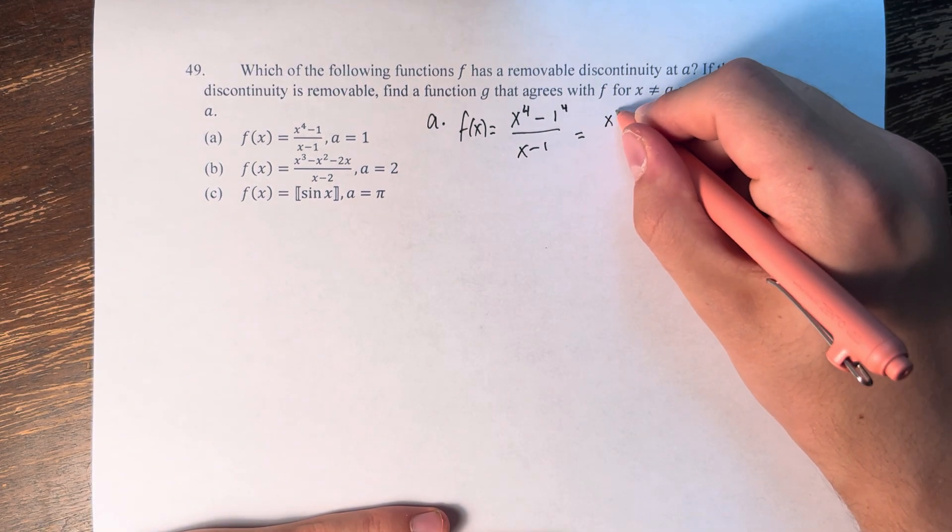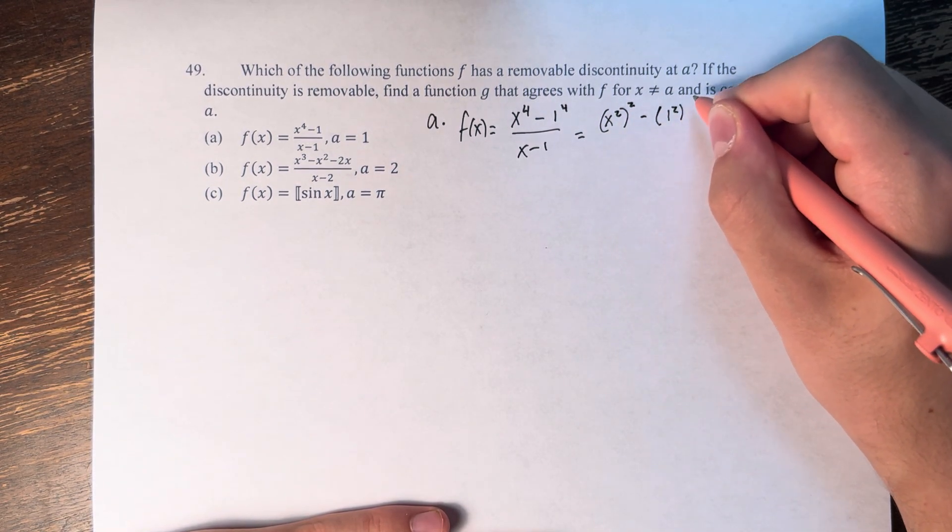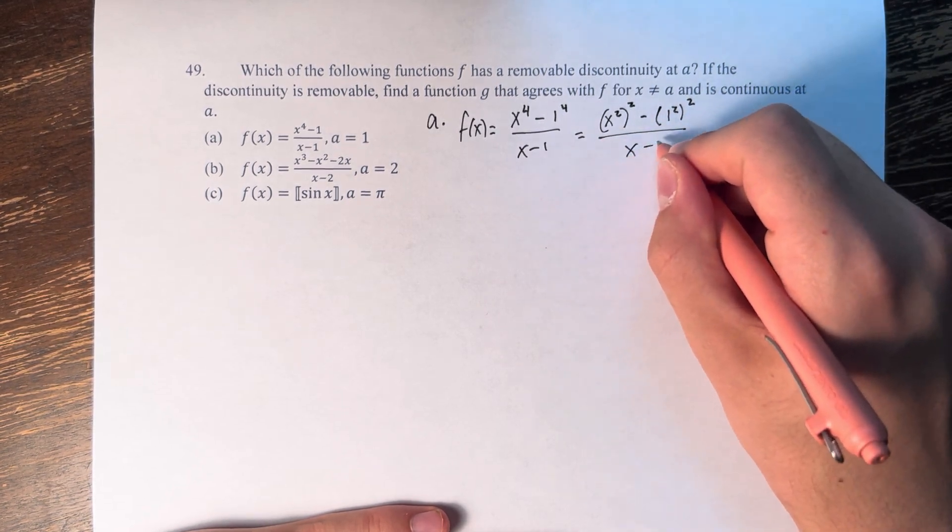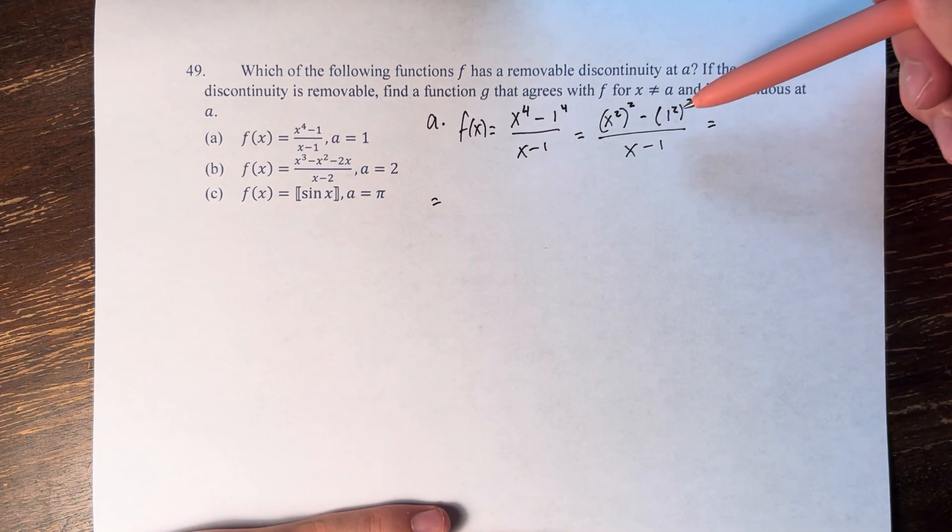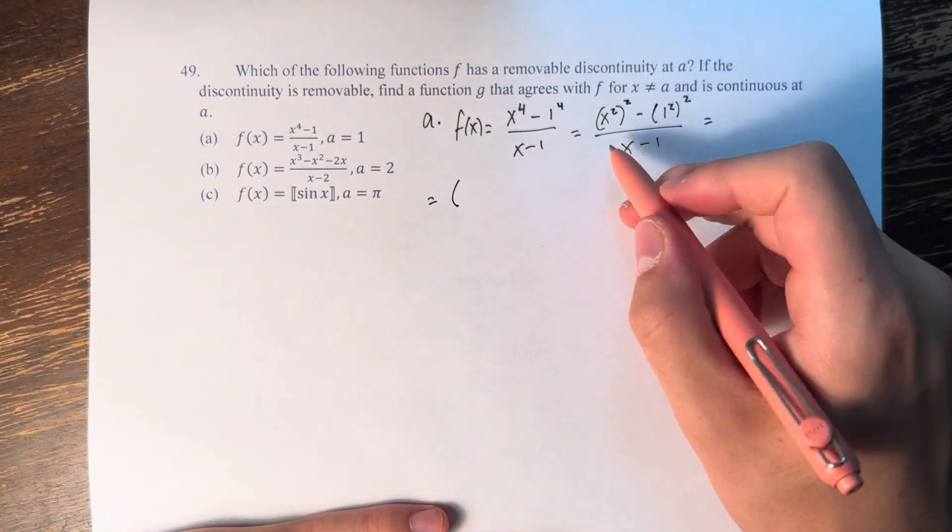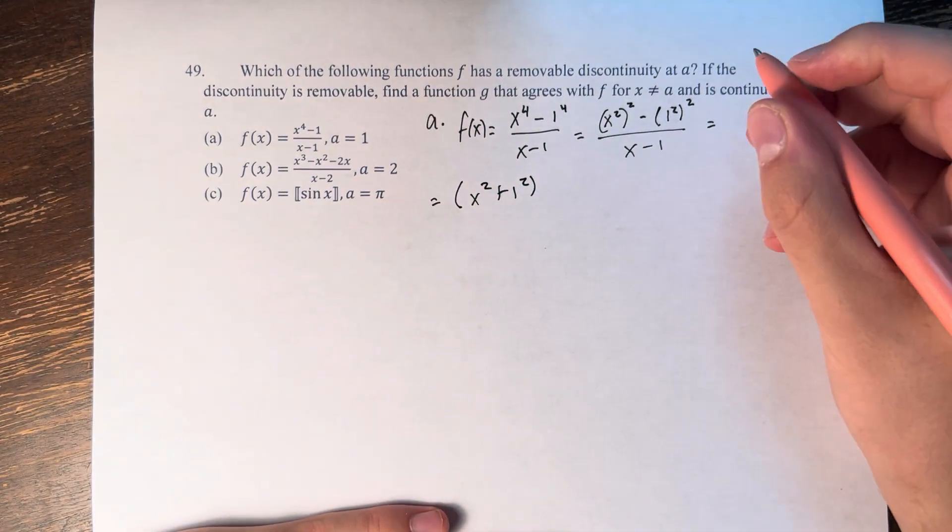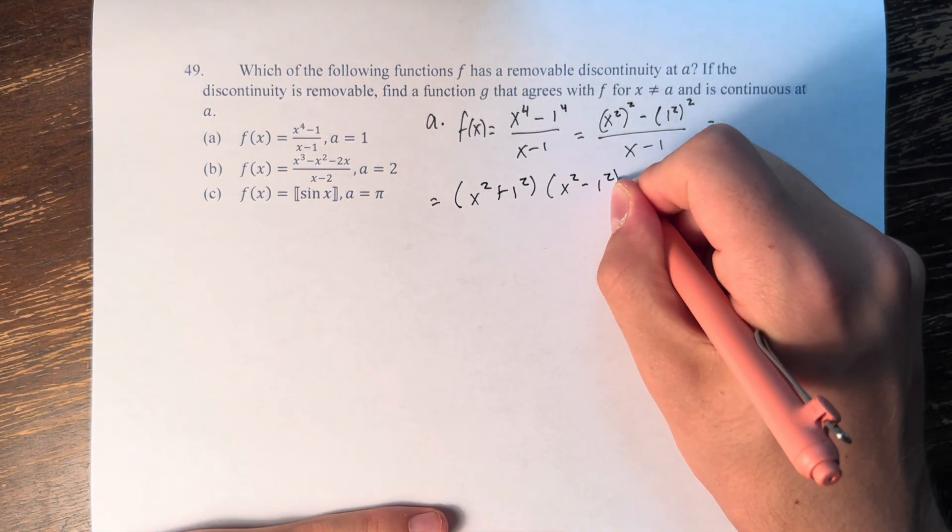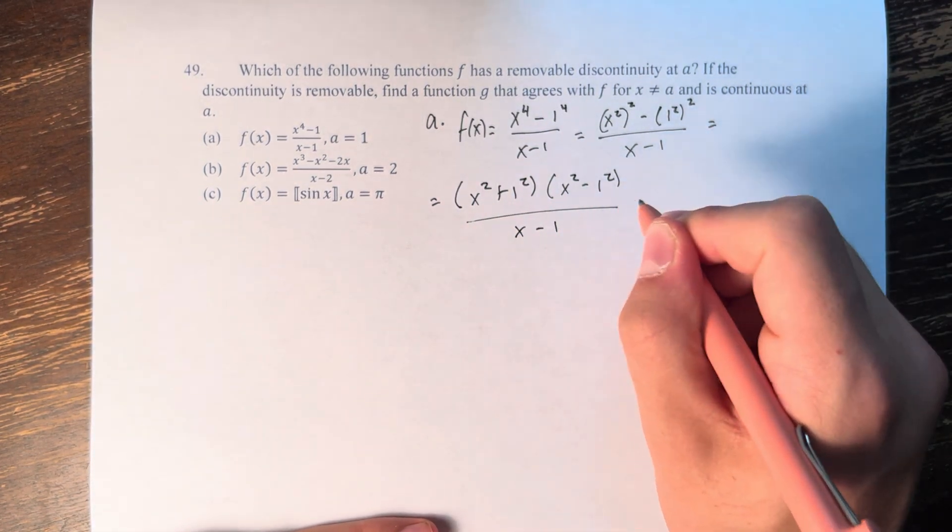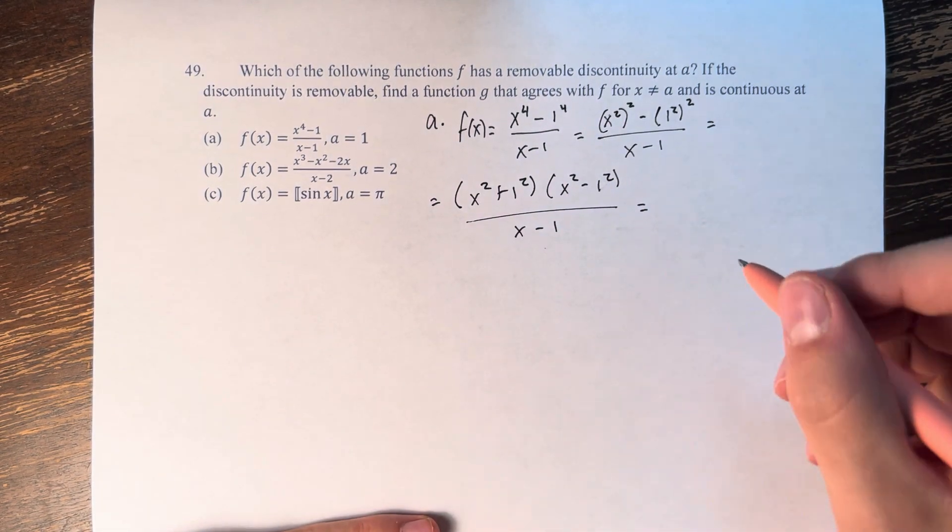This is x squared squared minus 1 squared. This is therefore equal to the difference of two squares. So you add the two things being squared, x squared plus 1, and then you subtract them, x squared minus 1 over x minus 1.